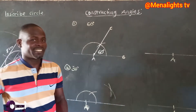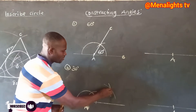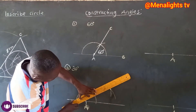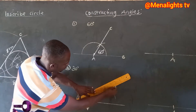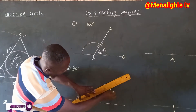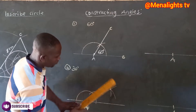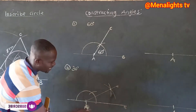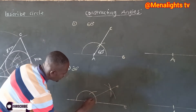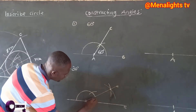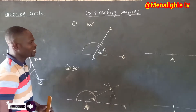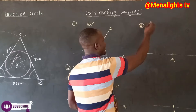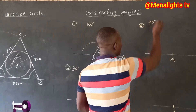Locate the point of intersection, then draw a line through. The angle BAC here is 30 degrees, and the other side is also 30 degrees. Now let's go to the third one, which is 90 degrees.